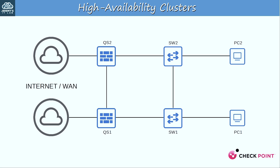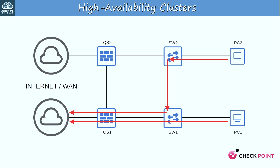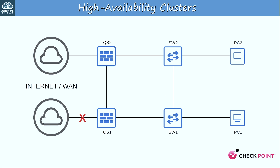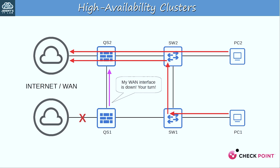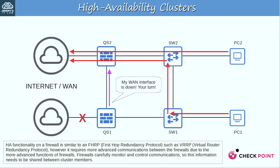To demonstrate HA, here's a simple network topology: two switches connected to our two QuantumSpark firewalls, QS1 and QS2. The firewalls act as the routers for the LAN, and on top of routing functionality these QuantumSparks are next-generation firewalls with advanced security features such as intrusion detection and prevention, antivirus, antibot, etc. During normal operations, end hosts will use QS1 as their default gateway. QS2 is just sitting back while QS1 does all the work. But then if QS1's WAN interface goes down, it sends a message to QS2, which then takes over the active role as the default gateway. If you've studied FHRPs — first-hop redundancy protocols — this is a very similar concept.